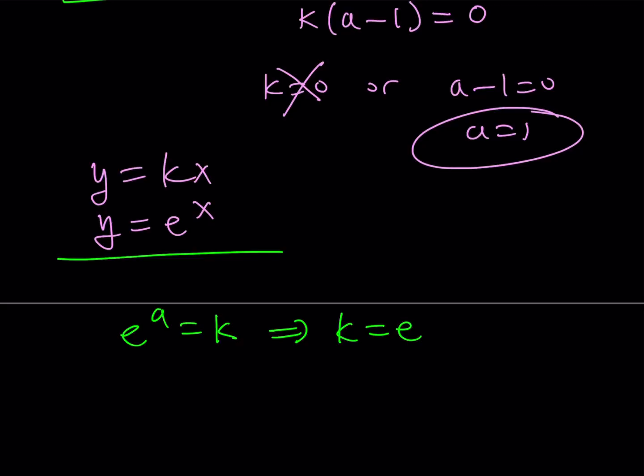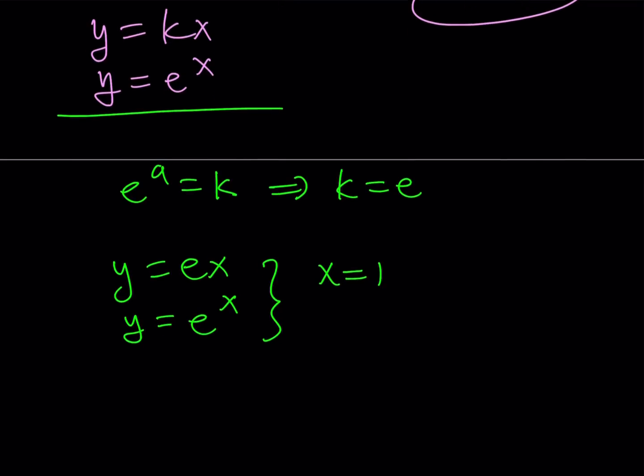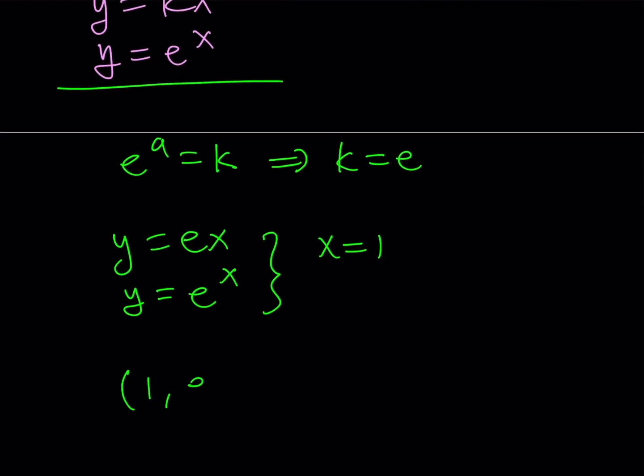This means that in order for these to intersect at one point, k needs to equal e, and a is equal to 1. It just means that we have y equals ex and y equals e to the power x, and they intersect at x equals 1, which means the intersection point is going to be (1, e). That basically brings us to the end of this video. Thank you for watching. I hope you enjoyed it. Don't forget to comment, like, and subscribe. Tomorrow I'll see you with another video. Until then, be safe, take care, and bye-bye.